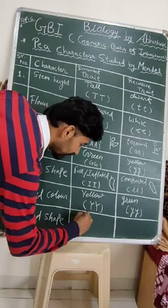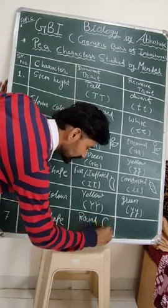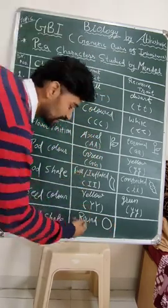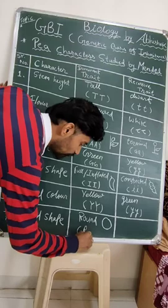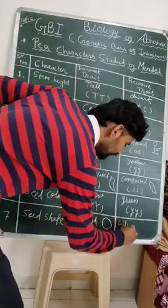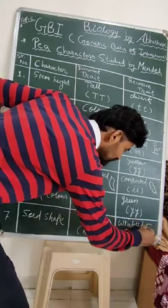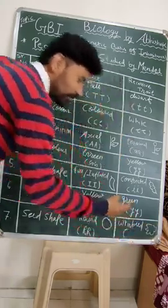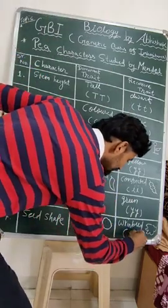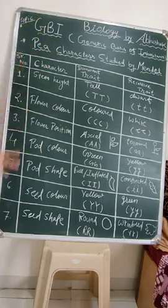The last character is seed shape. Seed shape is round — round is the dominant trait. The recessive form is wrinkled, where the seed's margin you can clearly observe has an interruption, and that is denoted as small r small r.